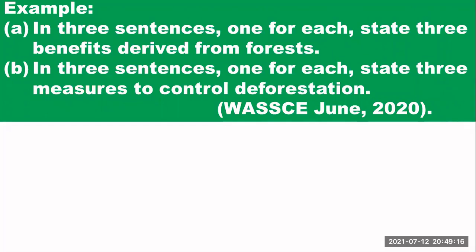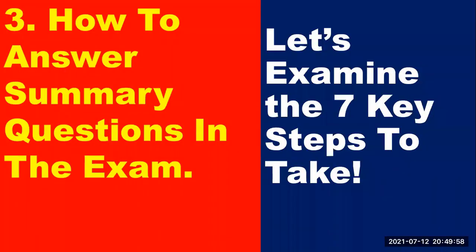Let's look at some questions from the West African Senior School Certificate Examination of June 2020. There are two summary questions that year. Question A: in three sentences, one for each, state three benefits derived from forests. Question B: in three sentences, one for each, state three measures to control deforestation. Now let's look at how to answer summary questions in the exam — the seven key steps to take.